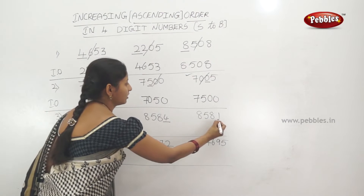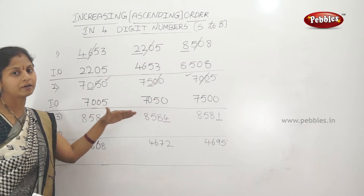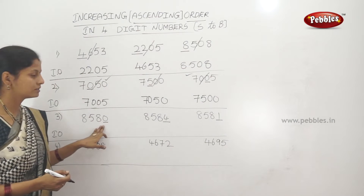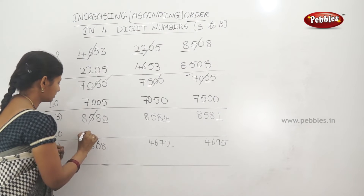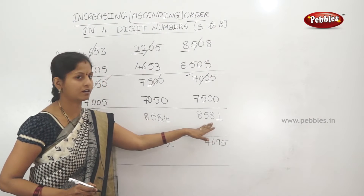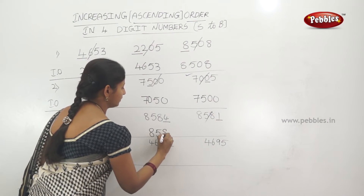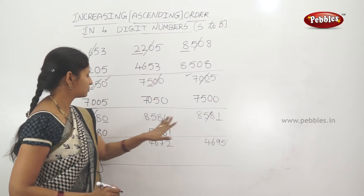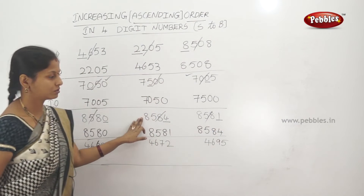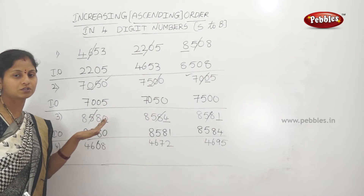Since the first three digits are the same, we compare the last digit: 0, 4, and 1. The smallest is 0, so 8,580 comes first. Next, comparing 1 and 4, the smaller is 1, so 8,581 is next. The remaining number is 8,584. So ascending order is: 8,580 — 8,581 — 8,584.